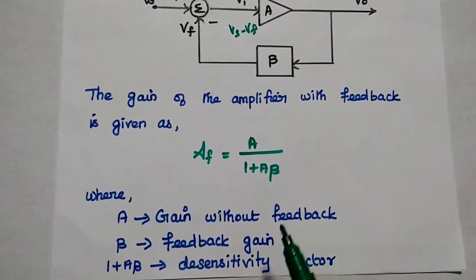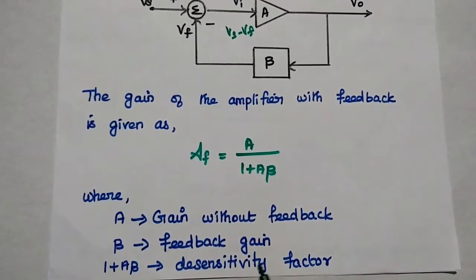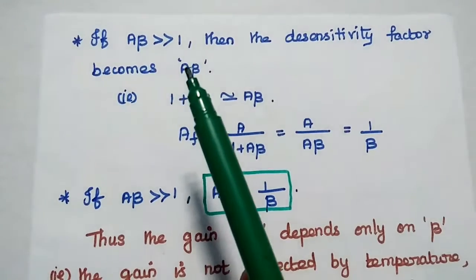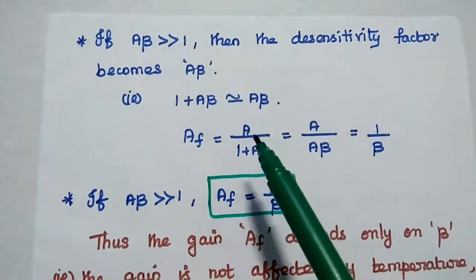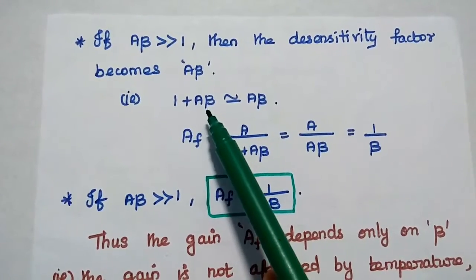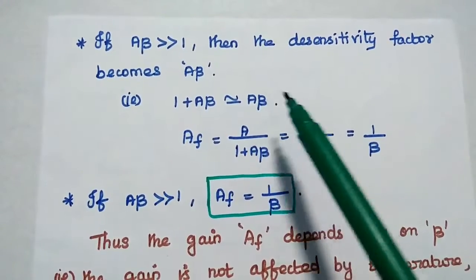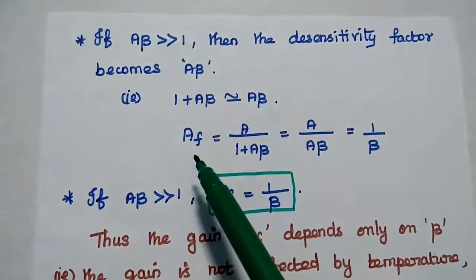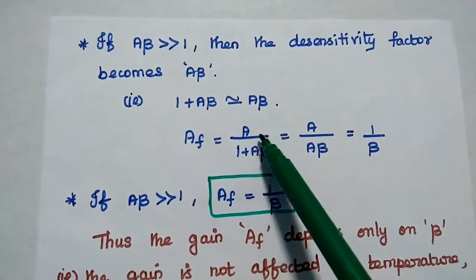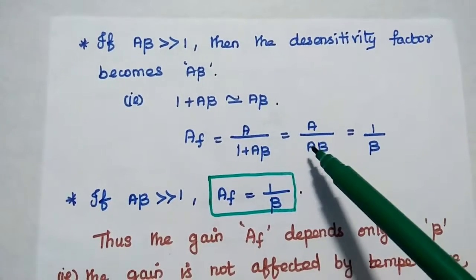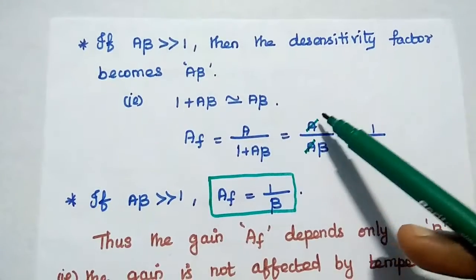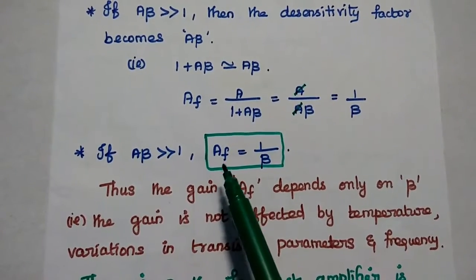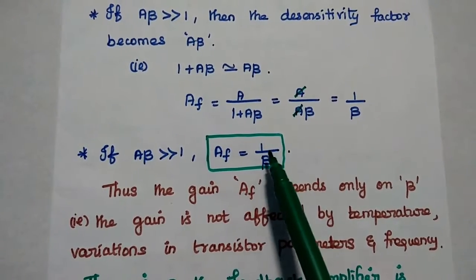A is the gain without feedback, beta is the feedback gain, and 1 plus A·beta is the desensitivity factor. If A·beta is much greater than 1, then the desensitivity factor becomes A·beta. That means 1 plus A·beta approximately equals A·beta, since 1 is negligible. Therefore, the gain Af equals A divided by A·beta, which simplifies to 1 divided by beta.